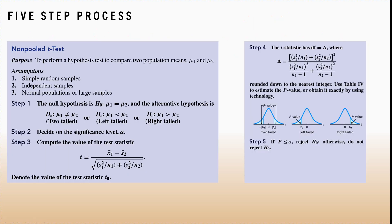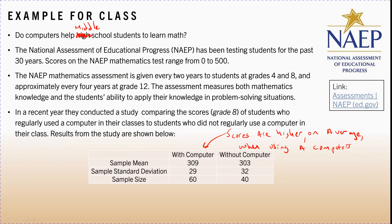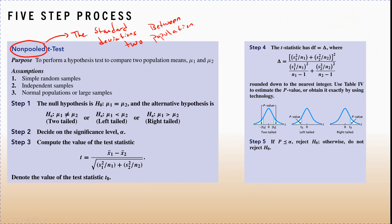For our course we're always going to perform what's called a non-pooled t-test. This means we're going to assume the standard deviations between the two populations are not the same. Even though our sample standard deviations may be close, we're going to assume the standard deviation for test scores of those with computers is not the same as the standard deviation for test scores of those without computers.